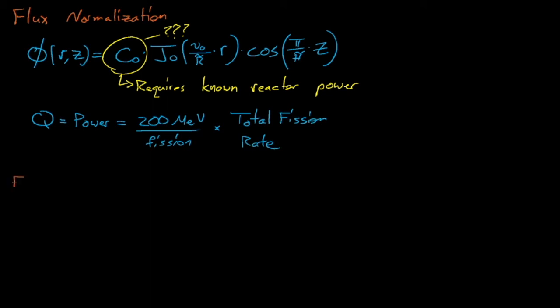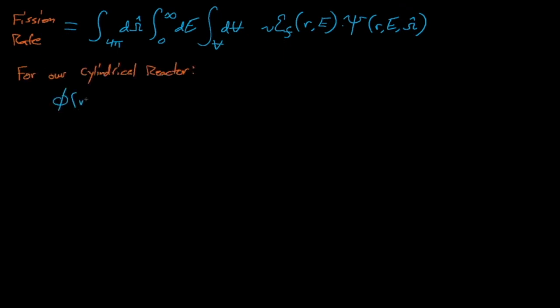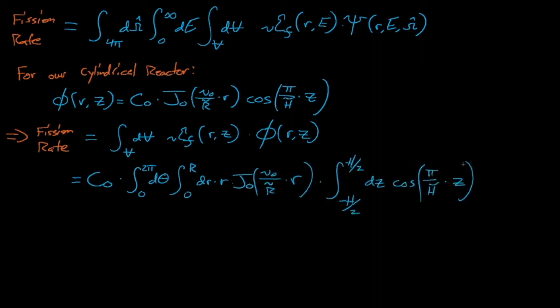The reactor's fission rate is described by this integral of nu sigma fission times the flux over all dimensions of phase space, which in this case is just the volume integral for our monoenergetic diffusion equation scalar flux expression. Note here that we integrate from 0 to r and from h over 2 to negative h over 2 instead of all the way out to the extrapolated r and h over 2s. This is because these extrapolated boundaries exist only in our flux expression solely to help the flux assume the correct shape. We don't actually have any fuel outside of the fuel volume, so it doesn't make sense to integrate our flux over these imaginary fuel regions.